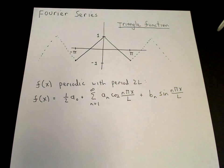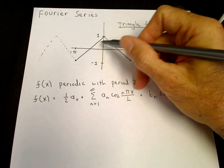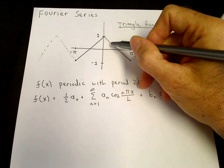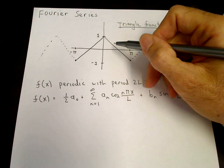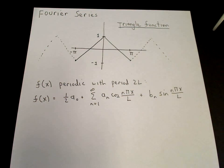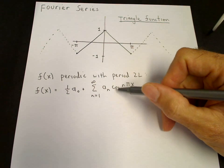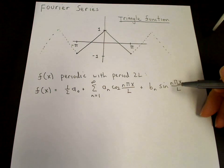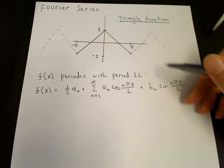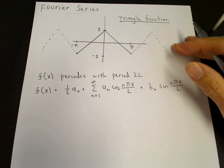The triangle function is special in that it's symmetric — it's an even function, so f of minus x equals f of plus x. An even function can be represented only in terms of cosines. Cosines are even functions, sines are odd functions. So an even function can be written as what's called a Fourier cosine series.